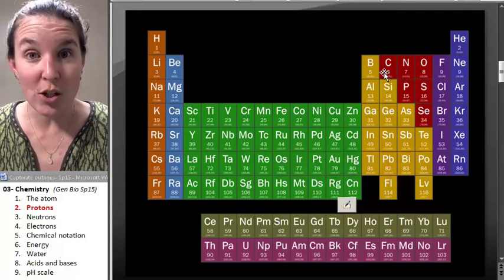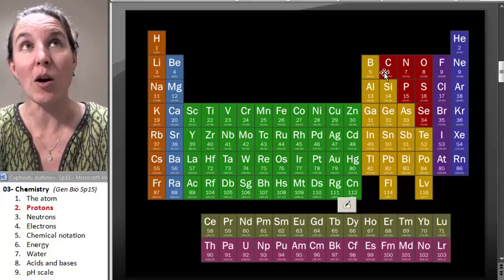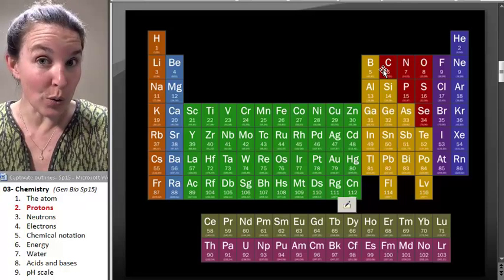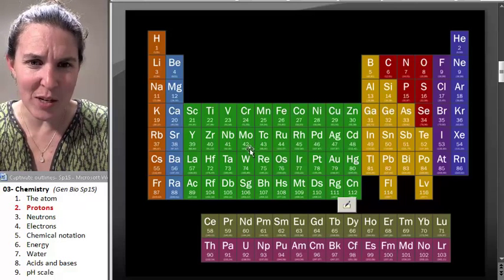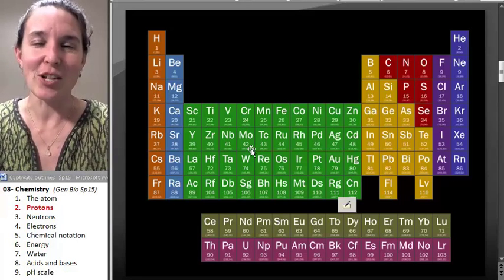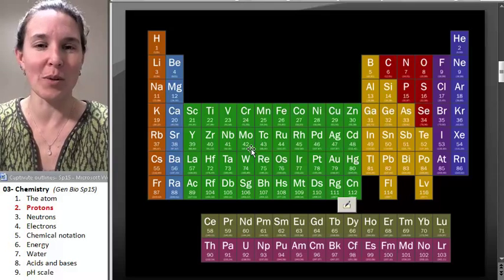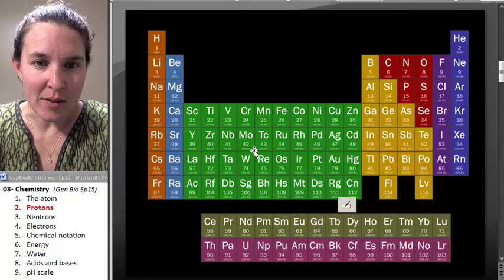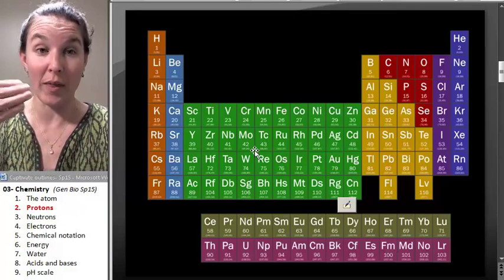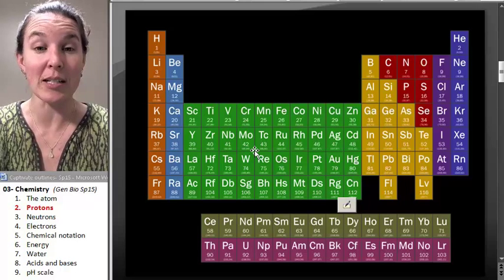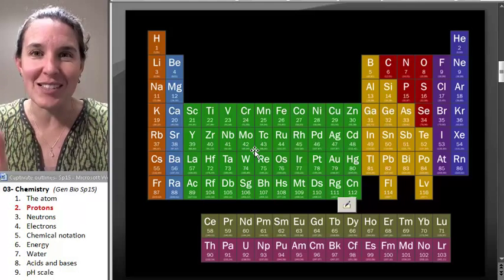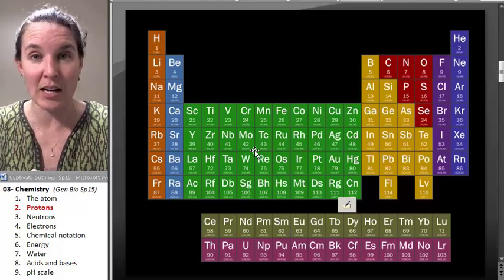However, you will need to be able to interpret it. If I said to you, tell me the element that has 42 protons, you're going to go looking for the number 42. That's like molybdenum or something like that, and you can just say Mo. But I will never ask you questions like that without you having access to a periodic table. But I do want you to know that the number of protons in the atom determines the nature of the element itself.